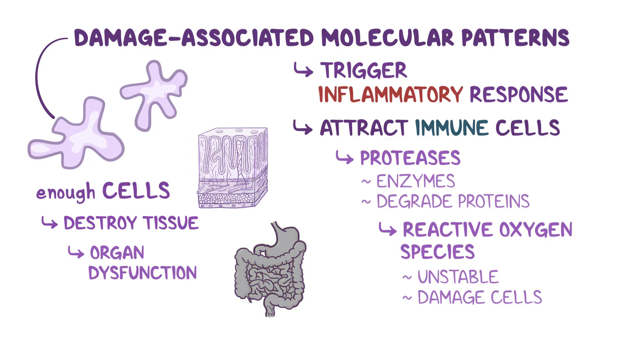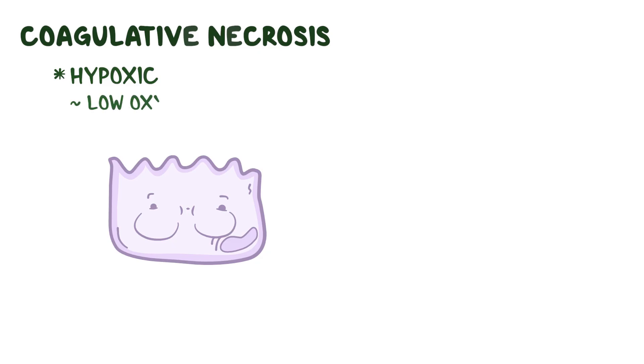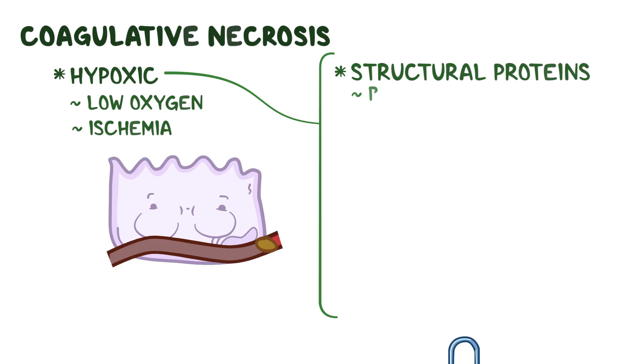It turns out that primary necrosis comes in a few different flavors. First, there's coagulative necrosis, which occurs when a tissue becomes hypoxic, has low levels of oxygen, most commonly due to ischemia. Hypoxia causes structural proteins to bend out of shape, like twisting a paper clip so that it can no longer work.